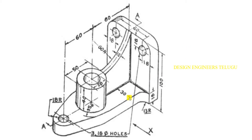Now we will start from the base. First of all we need to identify the dimensions of this object. Starting from the base, we have 30 on this side, then the thickness of the stiffener is 10. As it is a symmetric object we get the same 30 on the other side, so total length is 70, and then this length is 80.